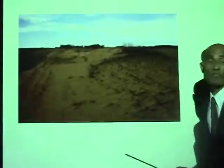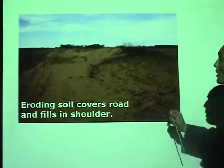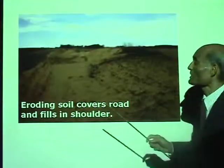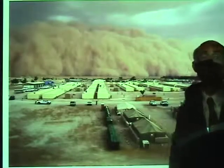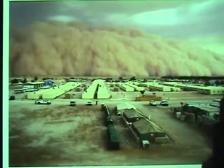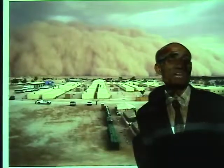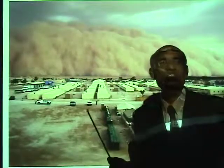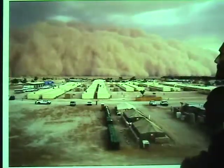Here is another example of erosion — eroding soil covers the road and fills the shoulder. And here is a great big dust storm, very common in the Middle East and Africa. Having lived in West Africa, I witnessed a number of these great big sand storms — once it finishes, you have two inches of dust in your home and have to hose down the entire house before you can enter.